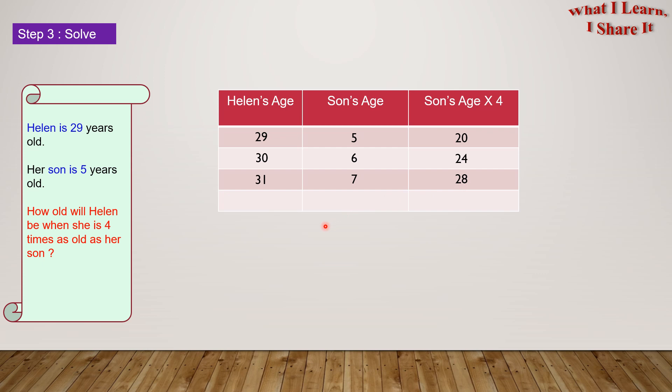After one more year, Helen will be 32 years, and her son will be 8 years old. So son's age, times 4, equals 8 times 4, which equals 32. At this point, Helen's age is 4 times her son's age, and that's exactly what we had to find out.